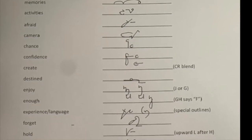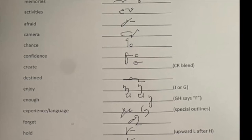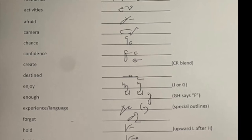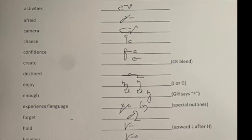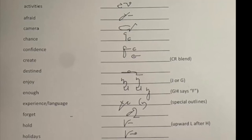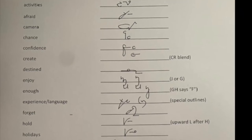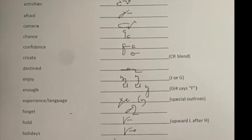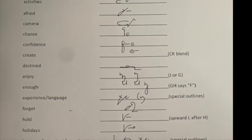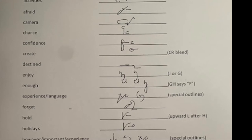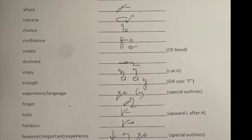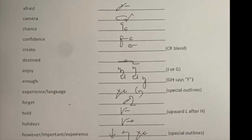Next word, chance. Remember, words that end in vowel N-C-E are written with the disjoined C. So we could write bounce, mints, chance, dance, fence and so on all with the disjoined C. Next word, confidence. CN blend, F-D and again that disjoined C for uns. Create. CR comes together without an intervening vowel, so we write the T inside that C and that tells us that CR is there. We don't need to write the R.